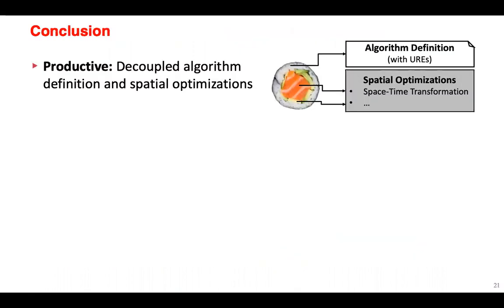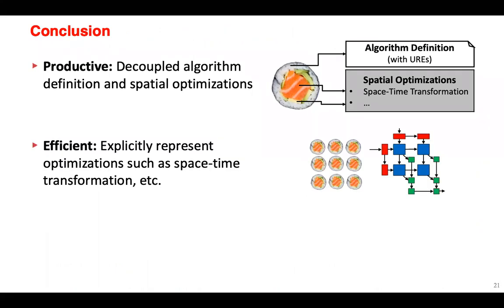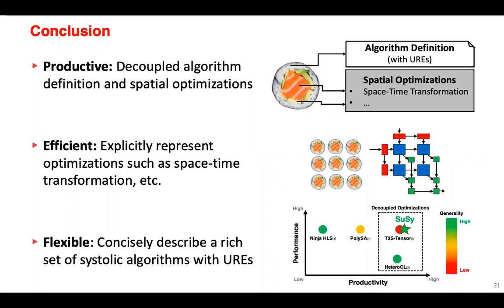In summary, SUSI is productive because we cleanly decouple algorithm definitions from spatial optimizations — like the rice and ingredients in sushi. We are efficient because we generate high-performance systolic arrays by explicitly representing spatial optimizations like space-time transformation. And we are flexible because we can describe a rich set of systolic algorithms with UREs. Returning to our design space diagram, we can now confidently place SUSI at high productivity, high generality, and high performance. Thank you.